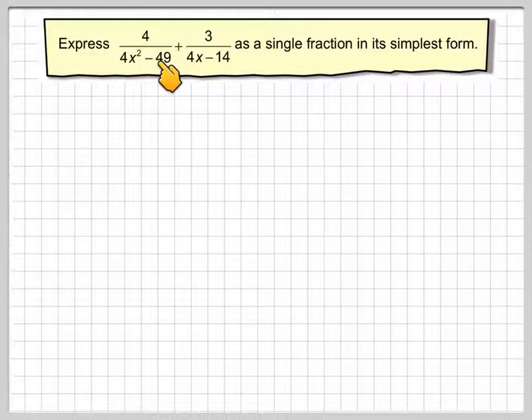Express 4 over 4x squared minus 49 plus 3 over 4x minus 14 as a single fraction in its simplest form.